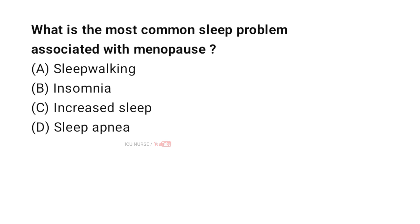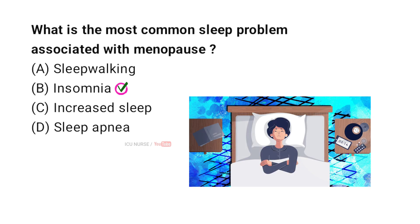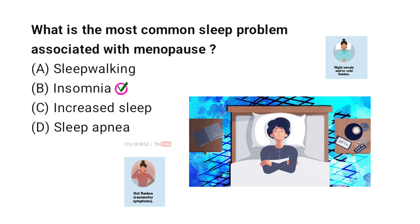What is the most common sleep problem associated with menopause? A. Sleepwalking. B. Insomnia. C. Increased sleep. D. Sleep apnea. And the correct answer is B. Insomnia. Insomnia, or difficulty falling and staying asleep, is a common issue during menopause, often due to night sweats, hot flashes, and hormonal changes.